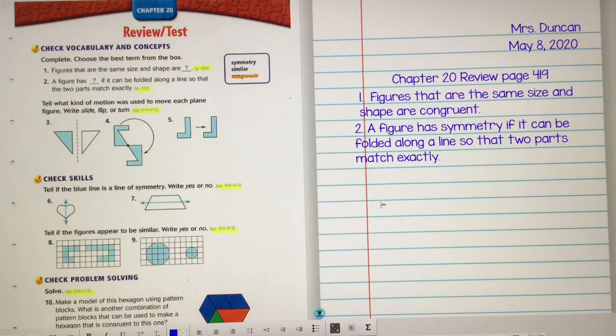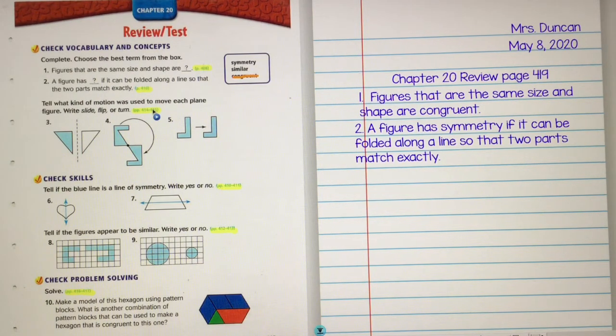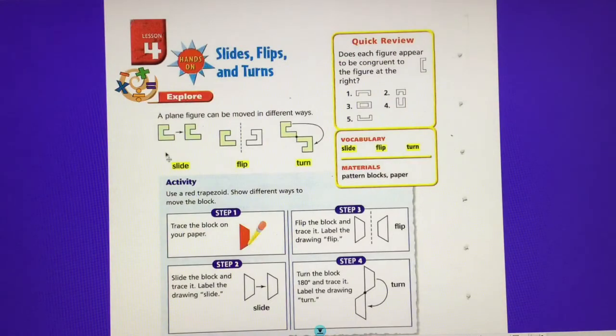Okay, then for three, four, and five, we have to tell what kind of motion was used to move each plane figure. Write slide, flip, or turn. So kind of review that. I'm going to go back to page 414 to review what a slide, flip, and a turn is. See, a slide doesn't change at all, right? It just slides along. Flip, it flips over a line and turn, you're going to turn it about one point, kind of like a clock, right? You're going to turn it at one point.